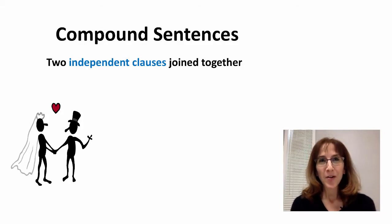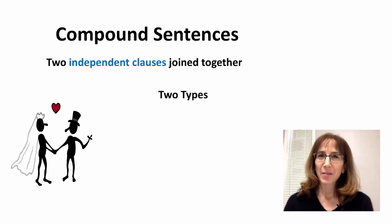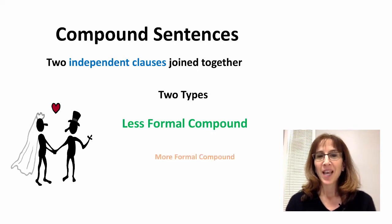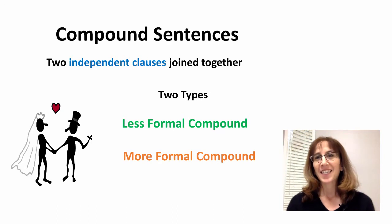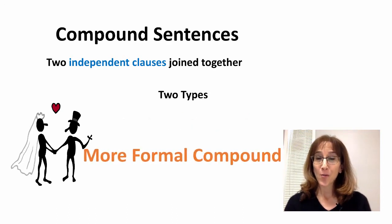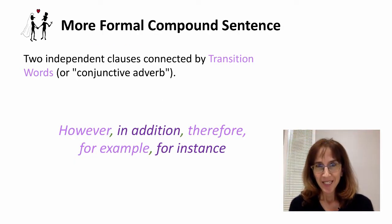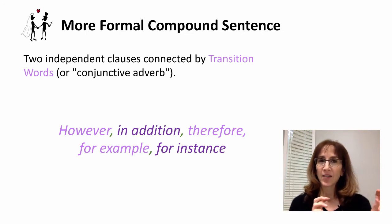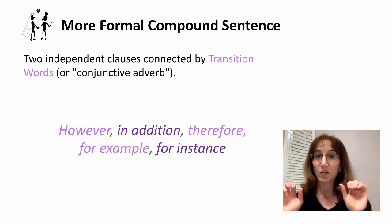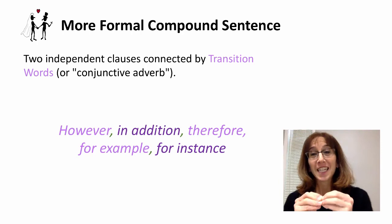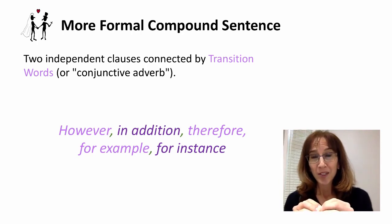Hi everybody. In this video I want to continue our discussion with compound sentences. As I mentioned in the last video, there are two types: the less formal compound and the more formal compound. In this video I want to talk about the more formal compound sentence. It's the same as the less formal compound in that there are two independent clauses connected by some kind of connecting word — in the more formal compound, that's the transition word or the conjunctive adverb.